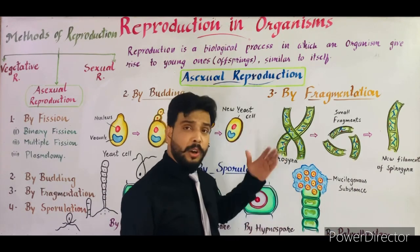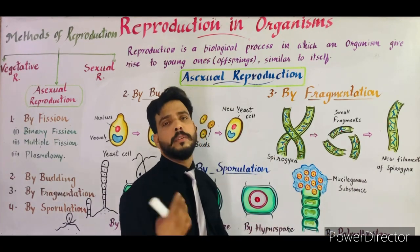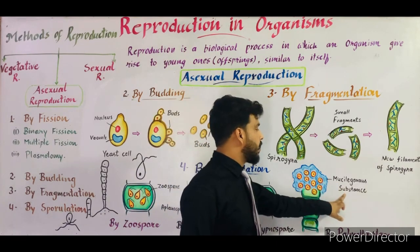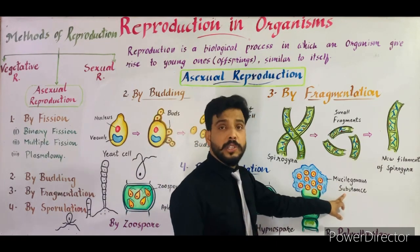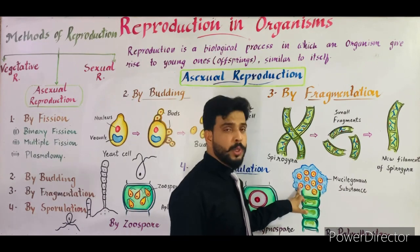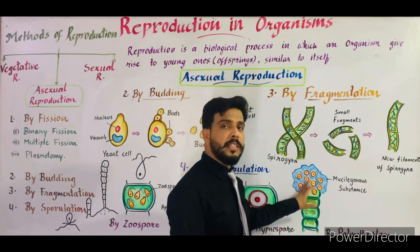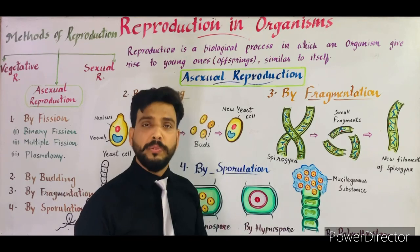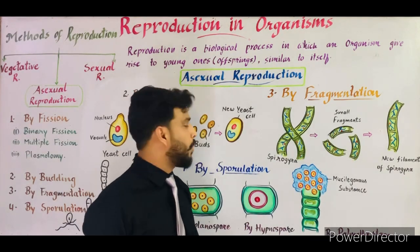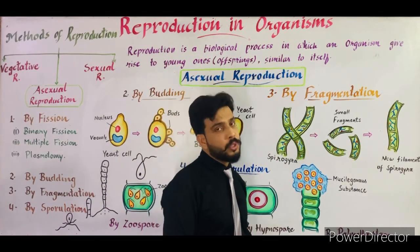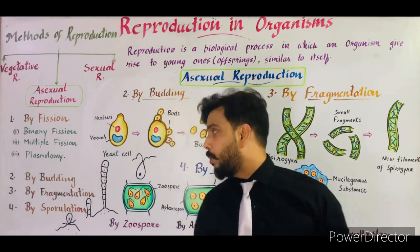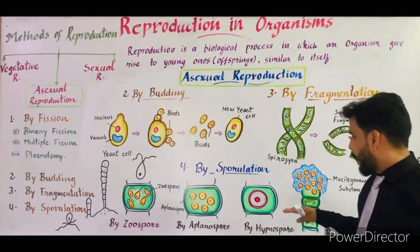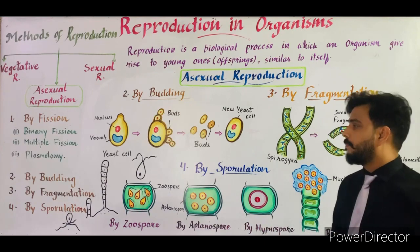On the return of favorable conditions — when water returns — the mucilaginous substance dissolves and these aplanospores become free. These aplanospores then germinate and give rise to a new filament of Ulothrix. That is how the palmella stage takes place. So that was all about sporulation: zoospore, aplanospore, hypnospore, and palmella stage.